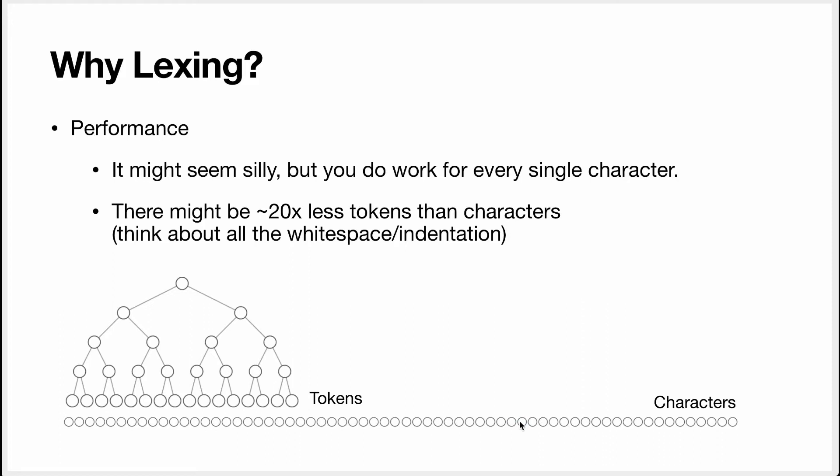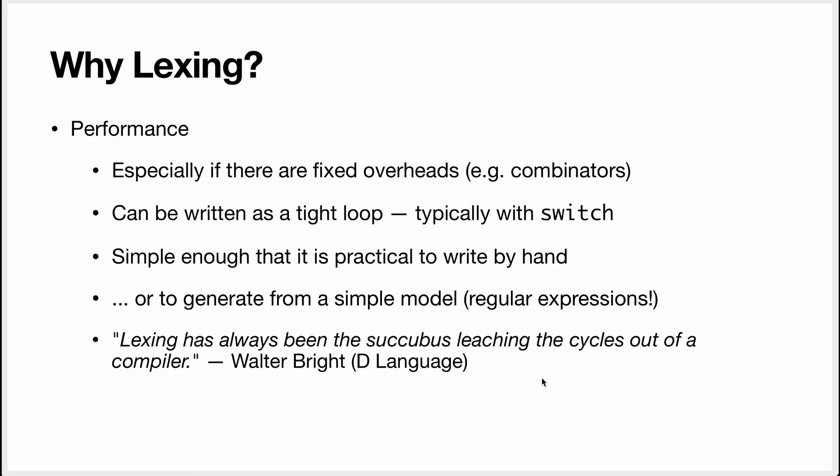To match a single character we had to call a parser combinator and that's a function call which is already expensive but it's a megamorphic function call which means it's hard to inline making it even more expensive. So this is what I just said.